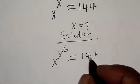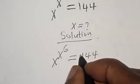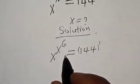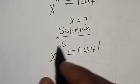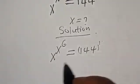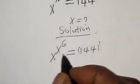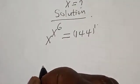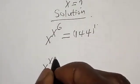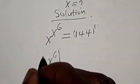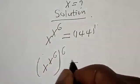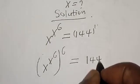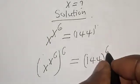Now remember this is also raised to the power of 1. Let's multiply the exponent of both sides by the power of 6. Then s raised to power x raised to power 6, raised to power 6, is equal to 144 raised to power of 6.